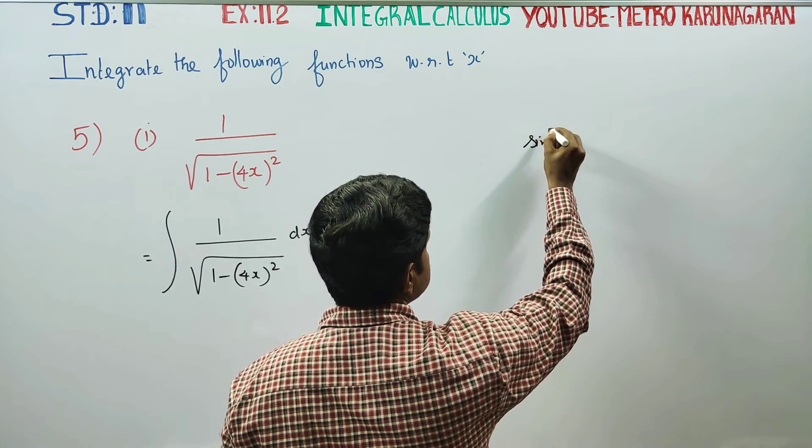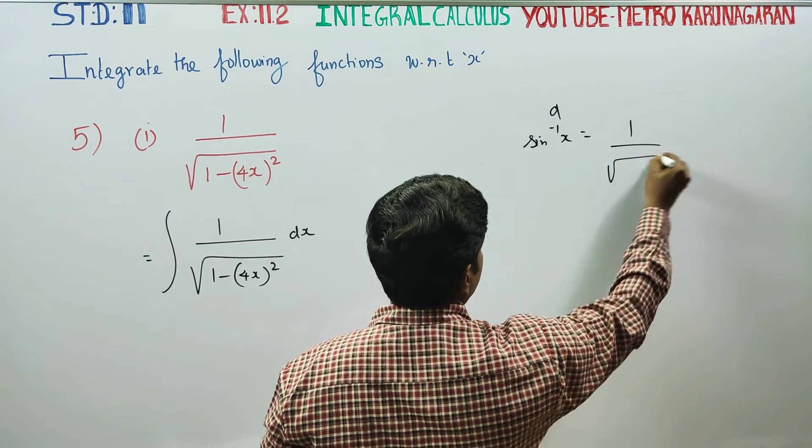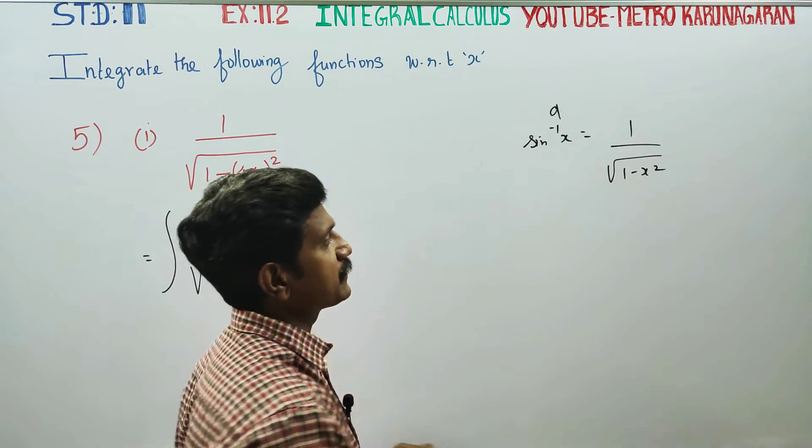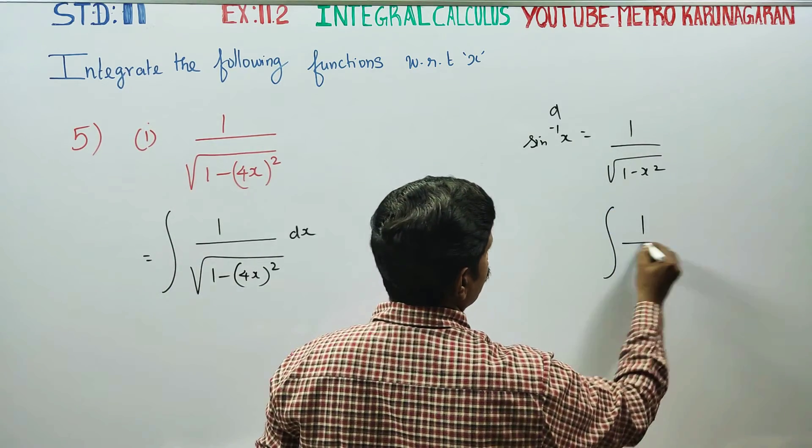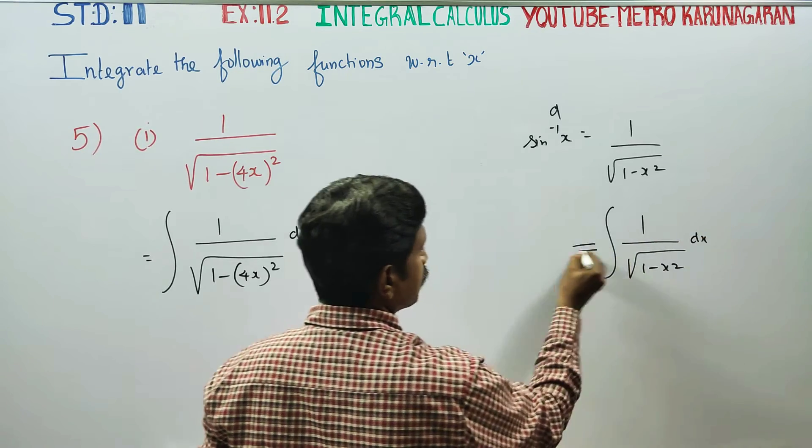Sin inverse x differentiates to 1 by square root of 1 minus x square. Integration of 1 by square root of 1 minus x square with respect to x. Reverse process.